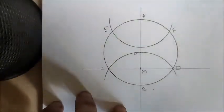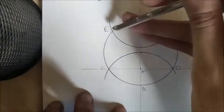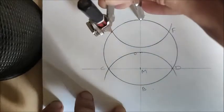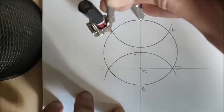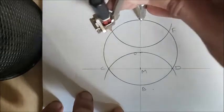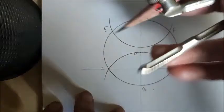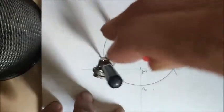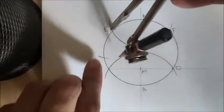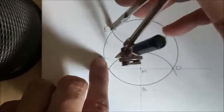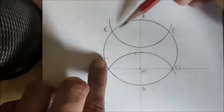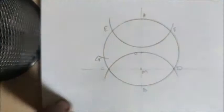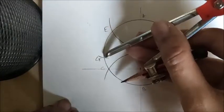Now we got two more intersection points. Let's name them E and F. So now A, E, F are the three points. If you measure the distance of A and E, it is the same. Now keep the divider on E and draw an arc on the circle. We are marking the vertices of the seven parts. We already have three: A, E, F. Now this is the fourth, G.